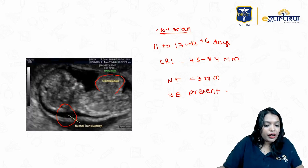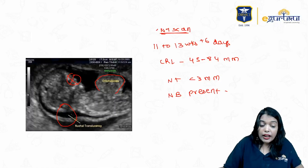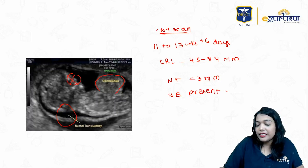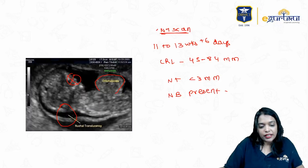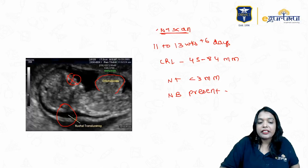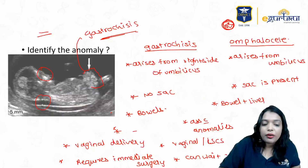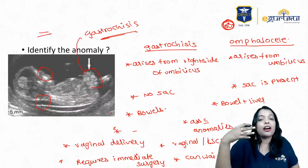In the NT scan, the nasal bone should always be present — it should appear as two parallel lines. In this image, you are not seeing the nasal bone, and there is increased nuchal translucency. I think these two images are pretty clear to all of you now.